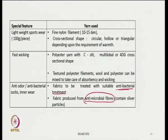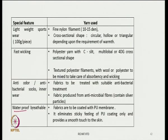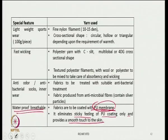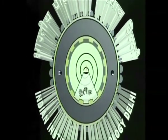Fibers with antimicrobial properties are also available and can be used. For waterproof breathable clothing — as discussed for cycling racing — fabrics are coated with a PU membrane, which eliminates sticky feeling and provides a smooth touch to the skin. The membrane contains micro-pores which do not allow liquid water to penetrate but allow moisture vapor to pass through, because the size of the moisture molecule is much less than that of liquid water. With this we close this particular topic and will cover another topic in the next class.